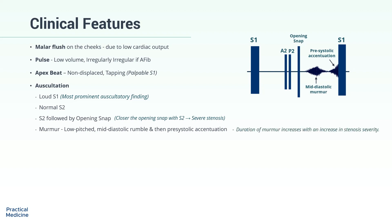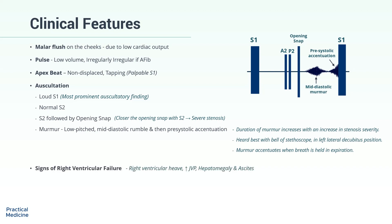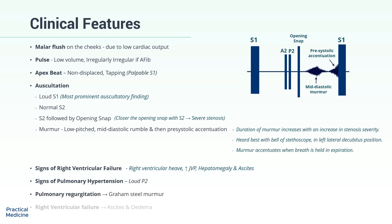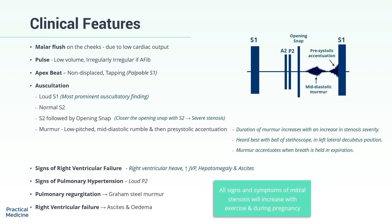The duration of the murmur increases with an increase in stenosis severity. The murmur is heard best with the bell of the stethoscope in the left lateral decubitus position, and accentuates when the breath is held in expiration. With long-standing disease, you may find signs of right ventricular failure, including right ventricular heave, jugular venous distension, hepatomegaly and ascites, and signs of pulmonary hypertension such as a loud pulmonary component of the second heart sound. Graham-Steele murmur can occur due to pulmonary regurgitation. All signs and symptoms of mitral stenosis will increase with exercise and during pregnancy.